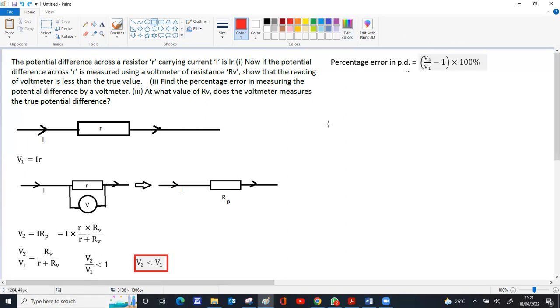taking the common denominator, one can be written as r plus rv over r plus rv. Taking the LCM, we get rv minus r minus rv over r plus rv times 100 percent. The rv terms cancel, giving minus r by r plus rv times 100 percent.